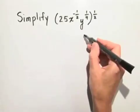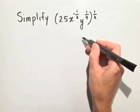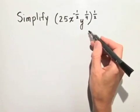Let's simplify the expression. We'll raise each factor to a power, and then we'll multiply the exponents.